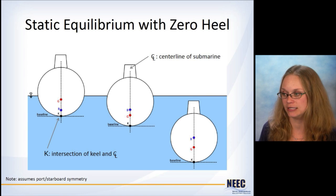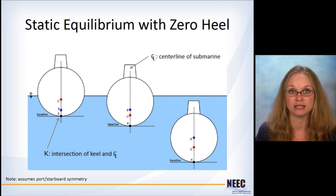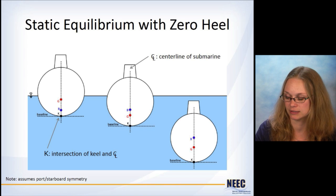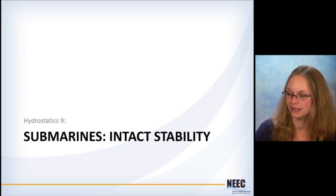For the case where there's zero heel, this again goes back to when we're talking about the surface ships. There's the centerline of the submarine, and then K is the intersection of the keel in the centerline with the baseline there. This is going to assume port and starboard symmetry with the submarine.